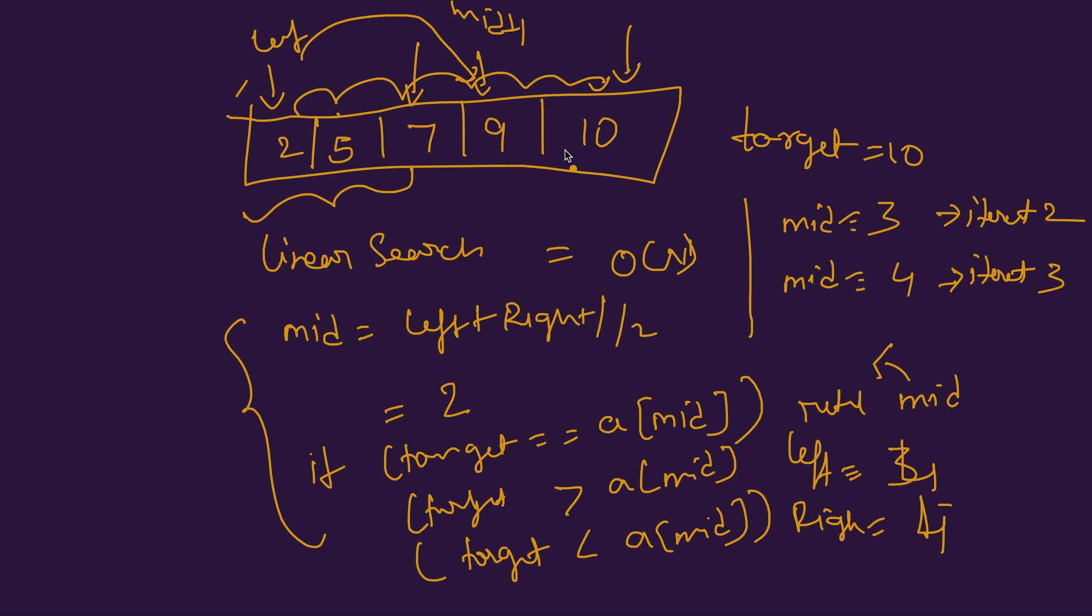If you observe, using the binary search approach, all we did is three iterations for five elements. We eliminated the search for all these elements, and it is more visible if the array is of larger size. We just did three operations instead of five operations which would have been done in linear search.